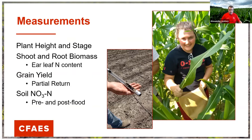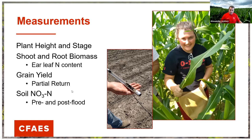Throughout the season, we collected information on growth stage and height, biomass, and ear leaf nitrogen content — which Taylor is shown sampling — to look at plant nitrogen content at pollination. Typically tissue sampling may be done at that time in corn, but it may be too late to really do anything about it if levels are too low. We also collected soil samples pre- and post-flood to see if an earlier soil sample could determine if adequate nitrogen remained after flooding. We also measured grain yield and partial return.